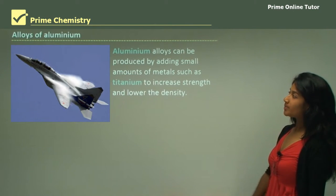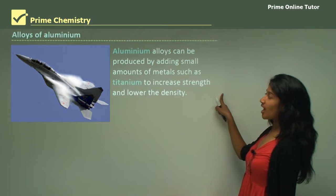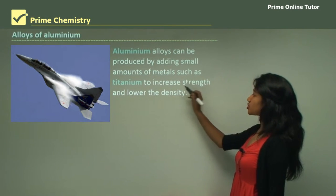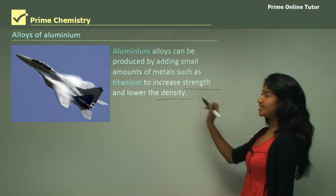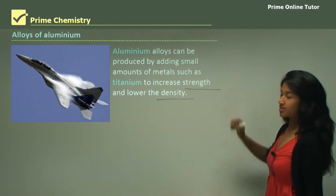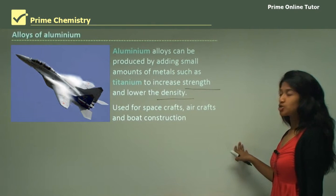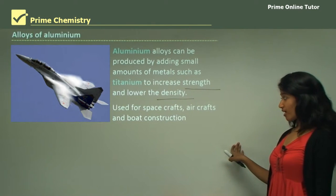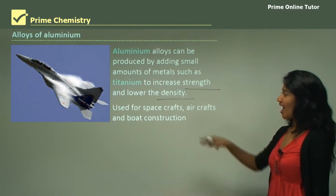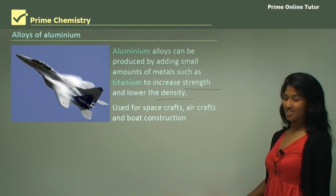Now we'll be talking about the alloys of aluminium. If you mix aluminium with titanium, you can increase the strength and also lower the density. This is an aluminium-titanium alloy and it is mainly used for spacecraft, aircraft and boat construction, because of its low density and increased strength.